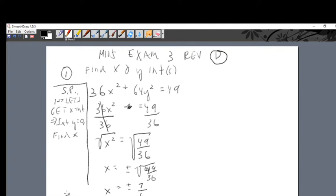So it's plus or minus 7, and the square root of 36 is 6. So here's our two intercepts: (7/6, 0) and (-7/6, 0).